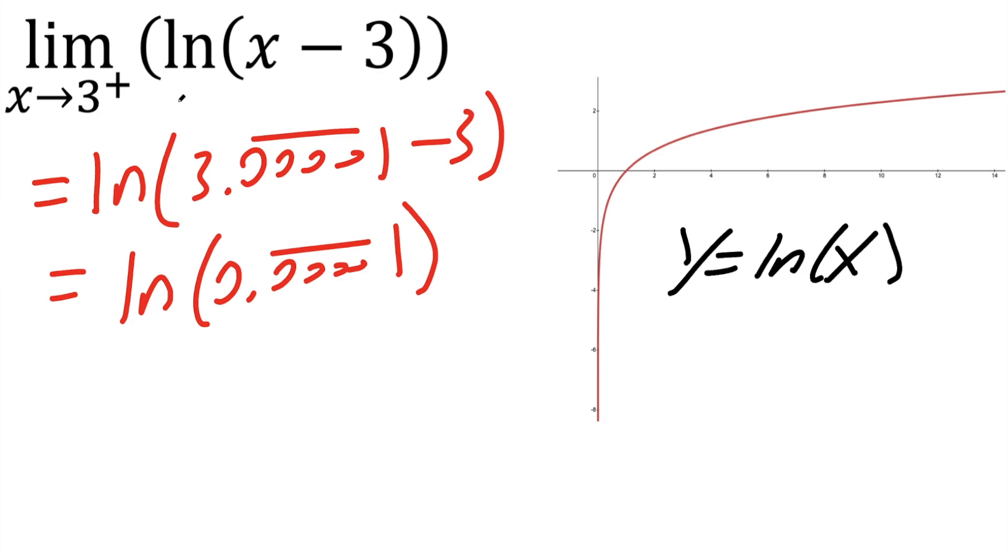And so for this problem right here, our final answer would be negative infinity, because ln parentheses very close to zero to the right is going to go straight down to negative infinity. And so this right here is our final answer.